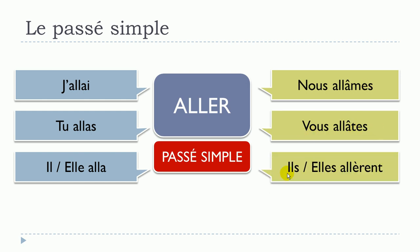Okay, let's see that one more time. J'allais, tu alla — remember, the final S is not pronounced. Il alla, elle alla — okay, so you get the two forms here, you are pronouncing them the same way. You put this S for tu but you don't pronounce it.